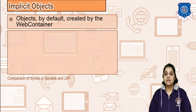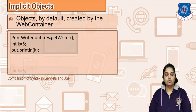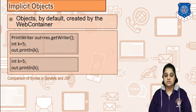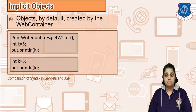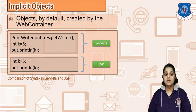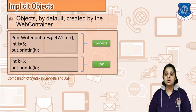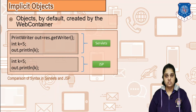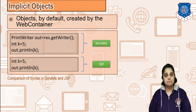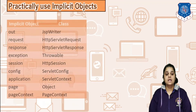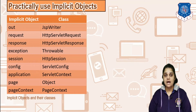Let us compare with a simple servlet example. In servlets, you write: PrintWriter out = response.getWriter(). When you wanted to print something, you used out.println(), but you had to declare this 'out' variable first. In JSP, you can directly write out.println() because it is implicitly understood that 'out' is an object of JSPWriter, already created by Tomcat. Using objects without creating them is what we call using implicit objects in JSP.